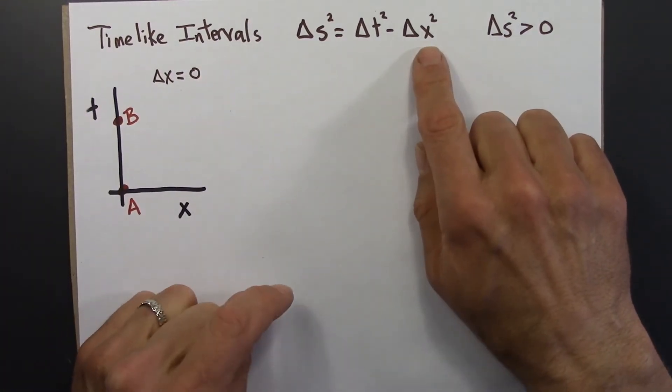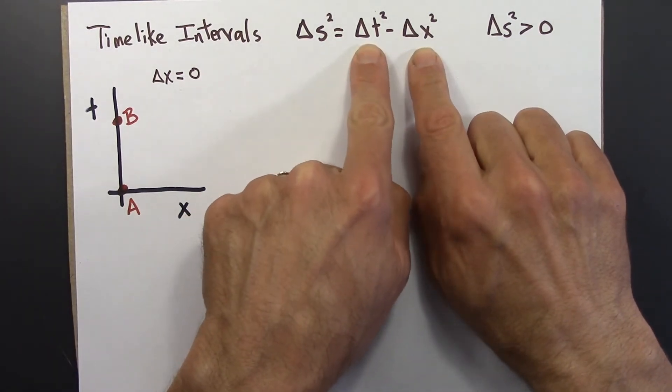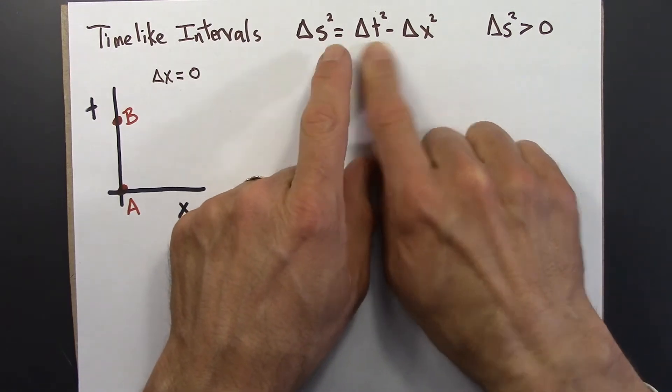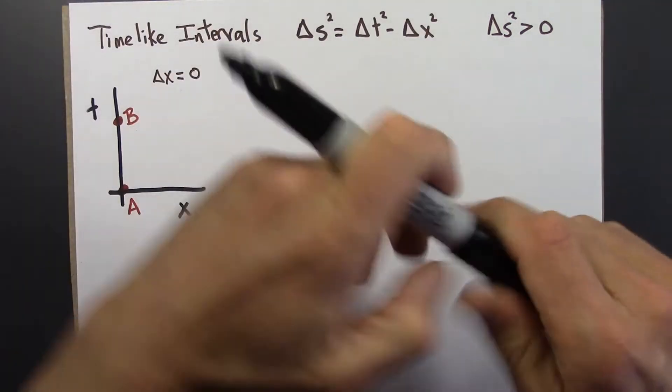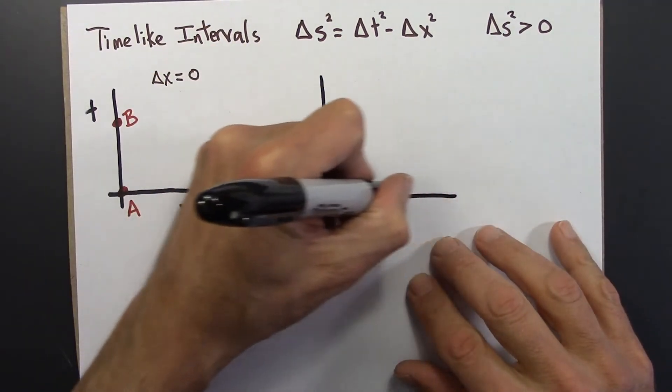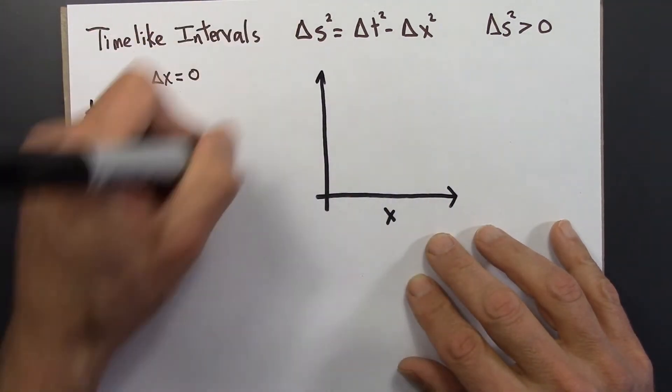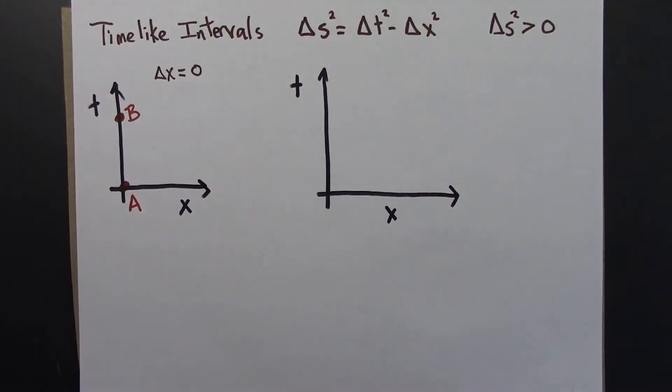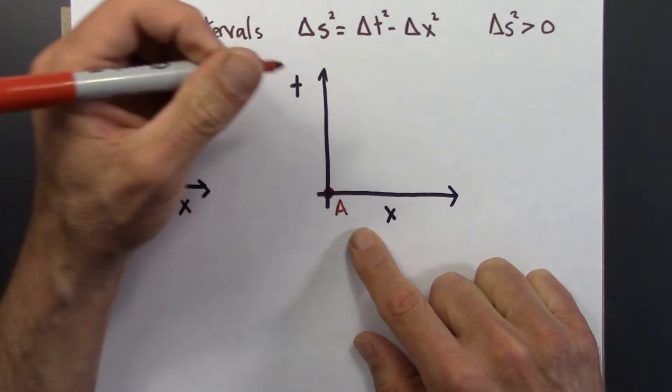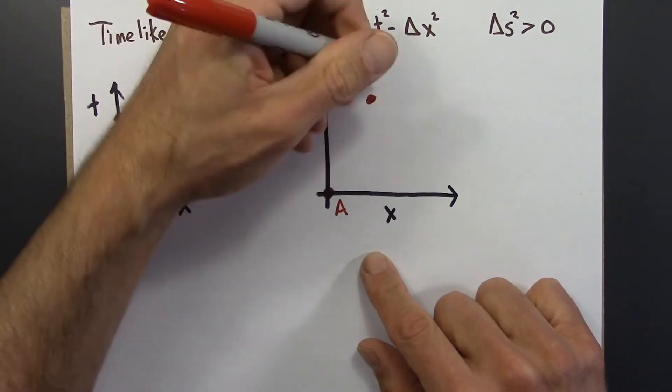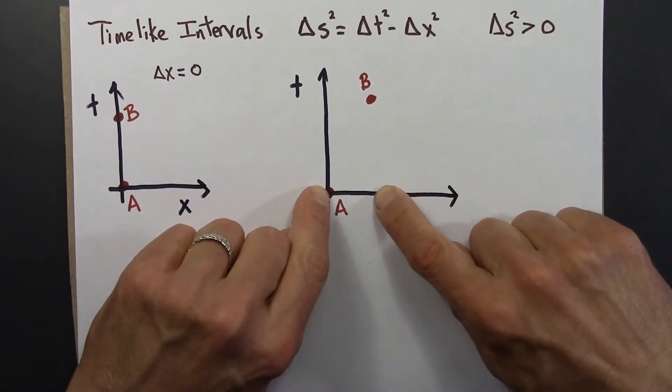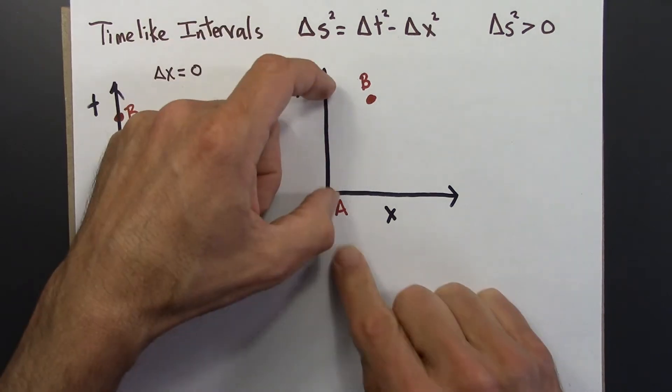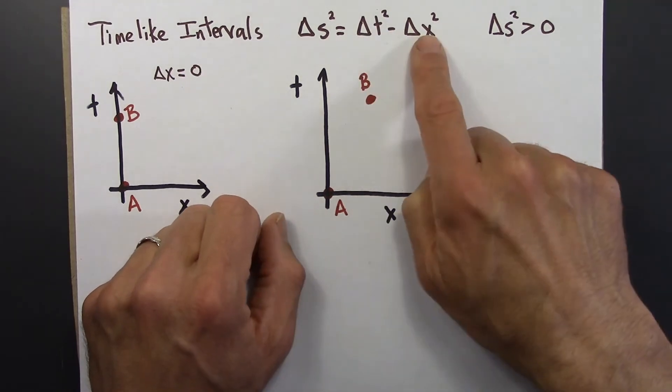But what if delta x is not zero? Maybe delta x is one and delta t is two, or something like that. Then delta t is larger than delta x, and we'll still have something positive. Let me draw what that might look like. Here's an x and a time axis. This will be A again, and maybe B is somewhere over here. There's delta x between my fingers, and there's delta t between my fingers. Delta t is definitely bigger than delta x, so we're going to get a positive number.